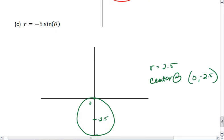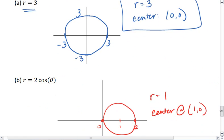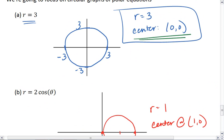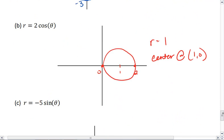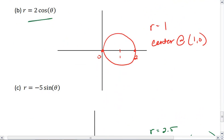These are the three basic circle equations we're going to look at. A circle centered about the origin where r is just the value. A circle with cosine, which is going to be somewhere on the x-axis, and the radius is always half of this number up front.